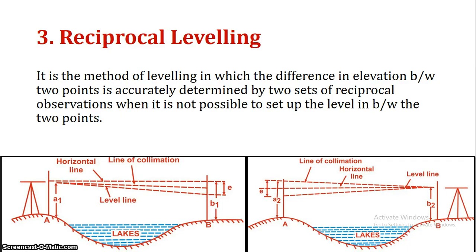Next is reciprocal leveling, a special method used when two points are separated by a wide gap, such as a river or valley, where the instrument cannot be set up midway. Because of the long distance, curvature and refraction errors are significant. To eliminate these errors, two sets of readings are taken — the instrument is set up near each point in turn — giving accurate elevations.